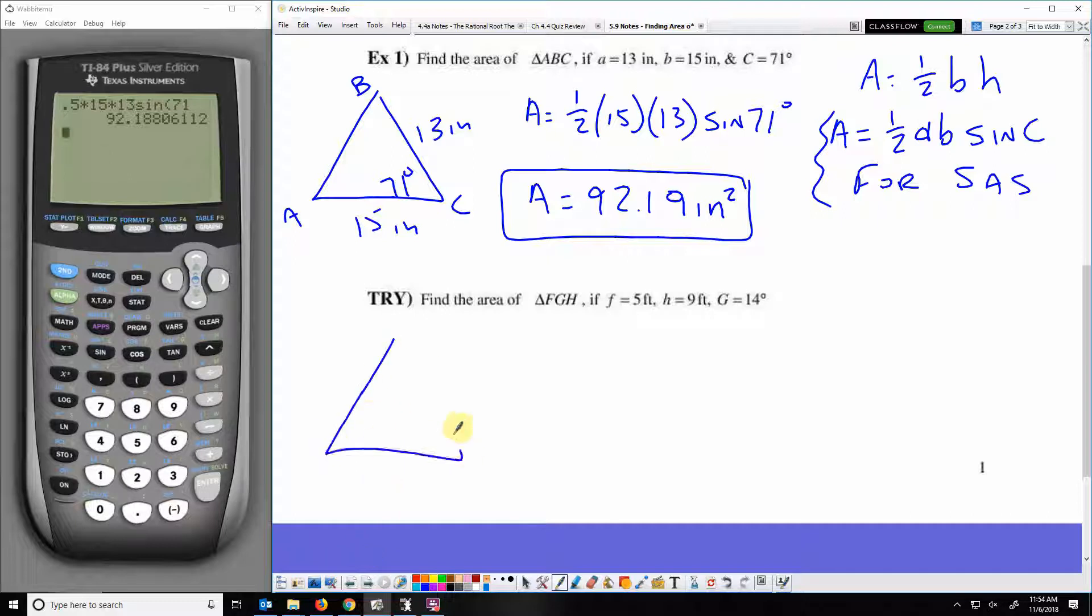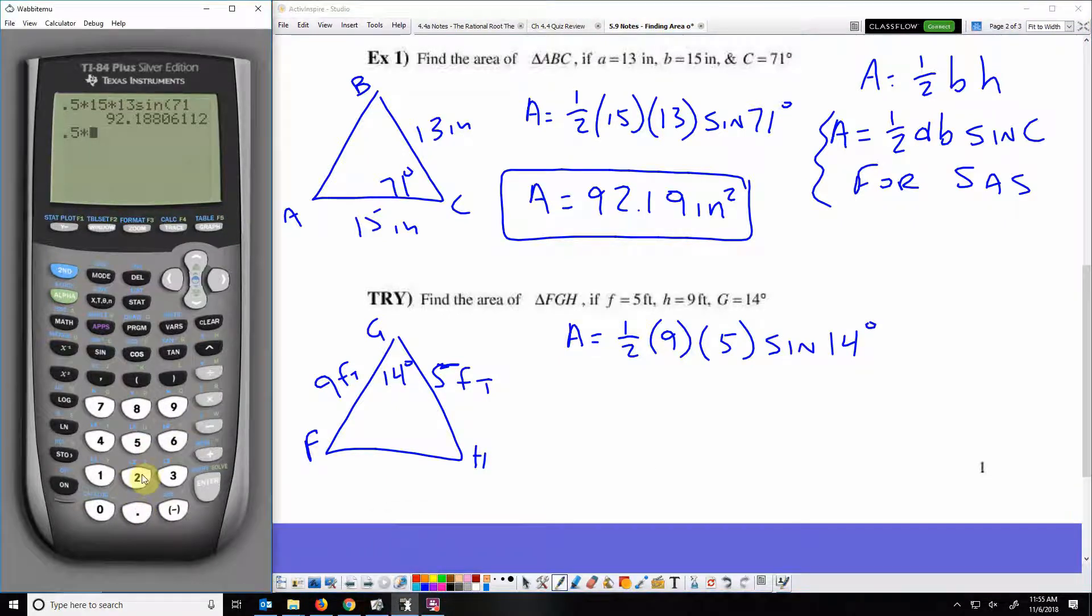We'll do another one, triangle FGH. Side F is 5 feet, H is 9 feet, and then G is 14 degrees. Once again, we have side-angle-side, so we can use the area equals one-half one side times another times sine of the included angle. We get about 5.44 feet squared.